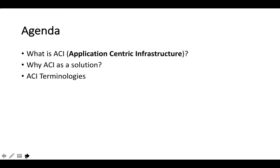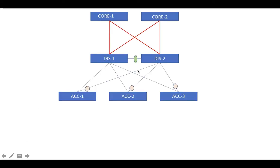Let's say I want to configure this network, where we have a three-tier architecture: access layer, distribution layer, and core layer. I will start with a few questions to understand the challenges in terms of configuration.